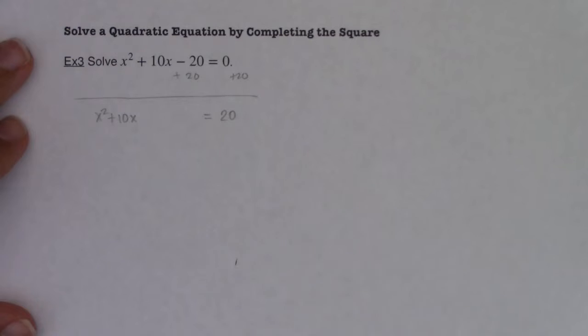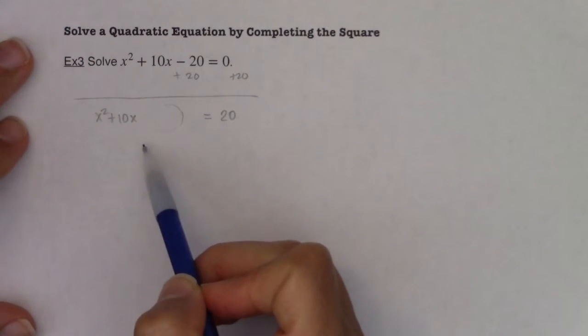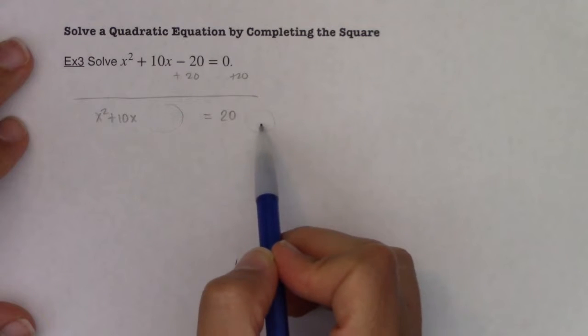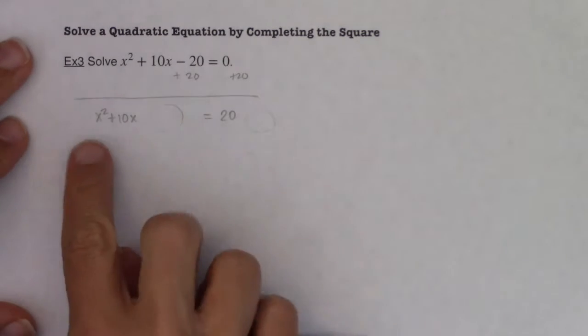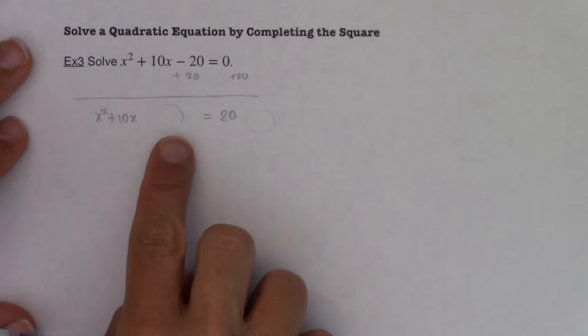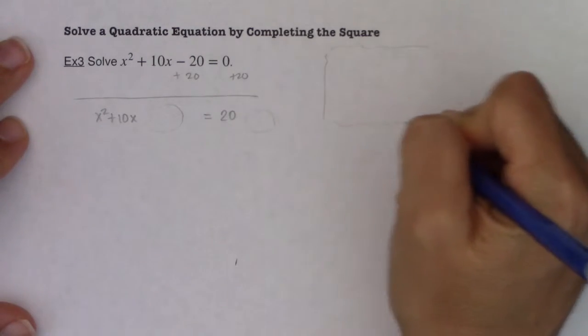So here is what we're going to do. We want to add some number to this side of the equation, and we'll balance it and we'll add the same number to the other side of the equation. But we want to add some number to this side of the equation that will turn this into a perfect square trinomial. And when you hear me talk about perfect square trinomial, let me just give you a for instance.